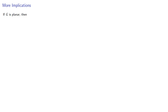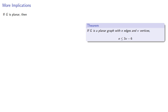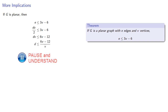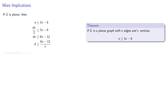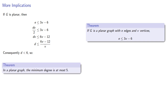Now again, if g is planar, e has to be less than or equal to 3v minus 6, and we know that e itself is greater than or equal to dv over 2, so we can substitute and do some algebra. Consequently, d is strictly less than 6. Therefore, in a planar graph the minimum degree is at most 5.